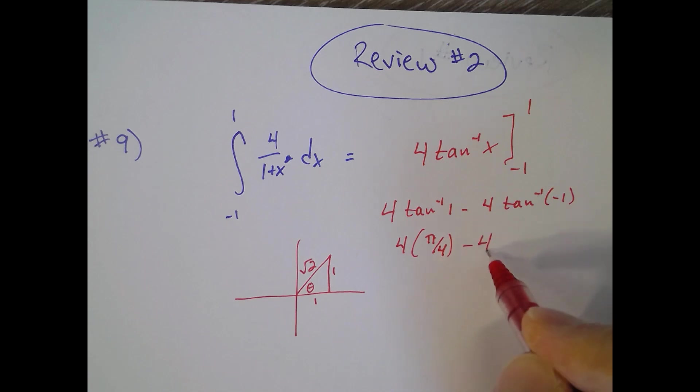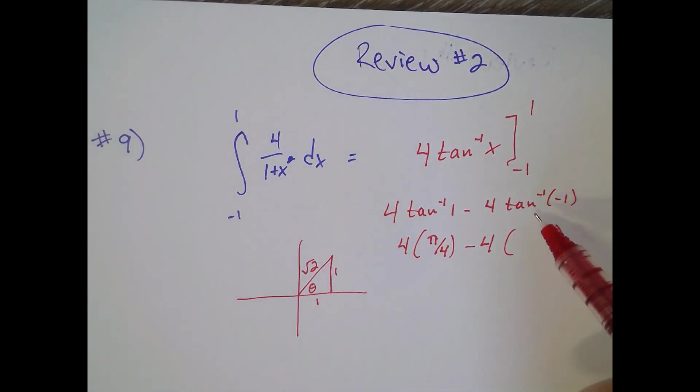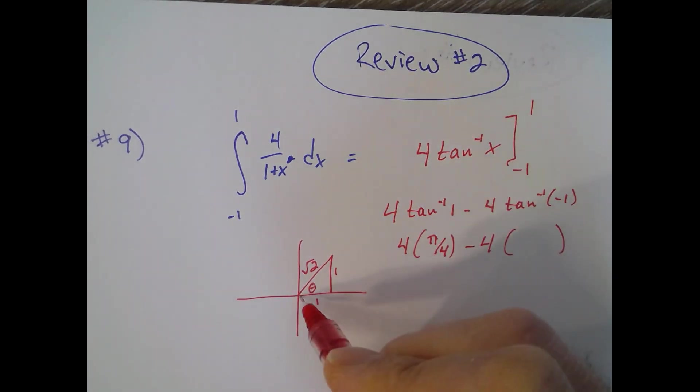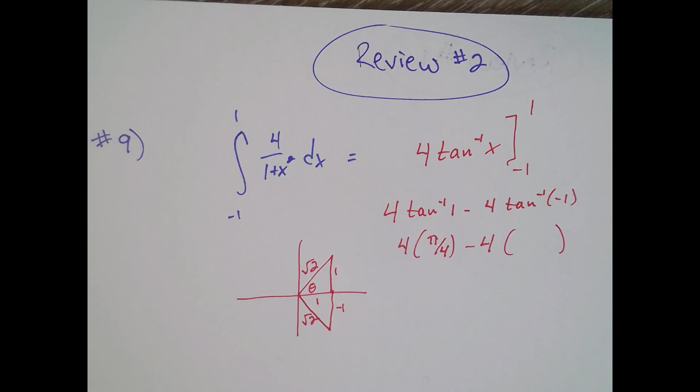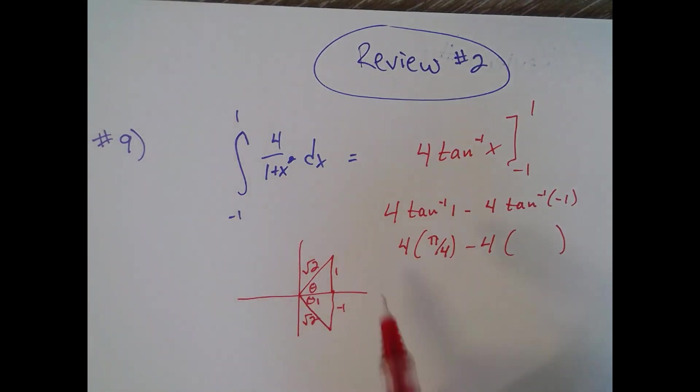Minus four times - now what's the inverse tangent of negative one? What angle has a tangent of negative one? So it's one, negative one, square root of two. Same size angle, it's just negative, so it'd be negative 45 or negative pi over four.